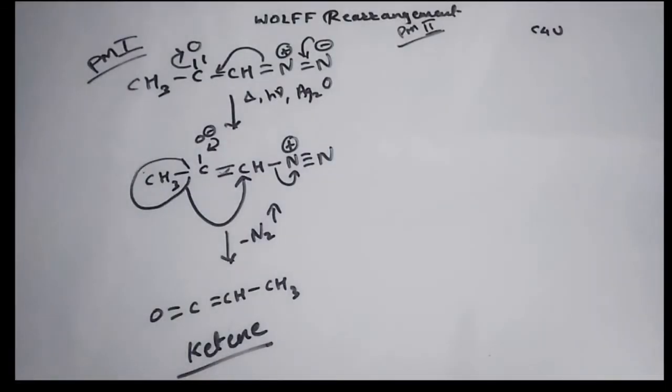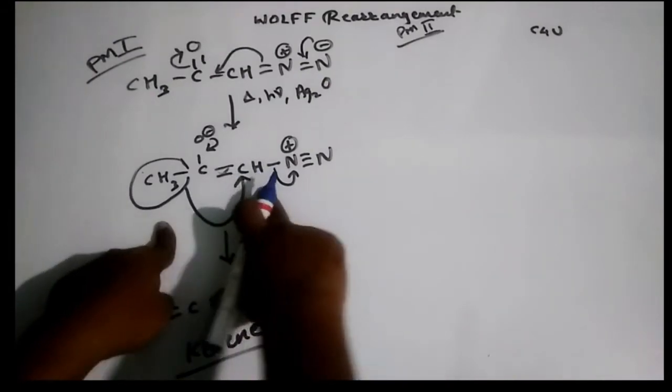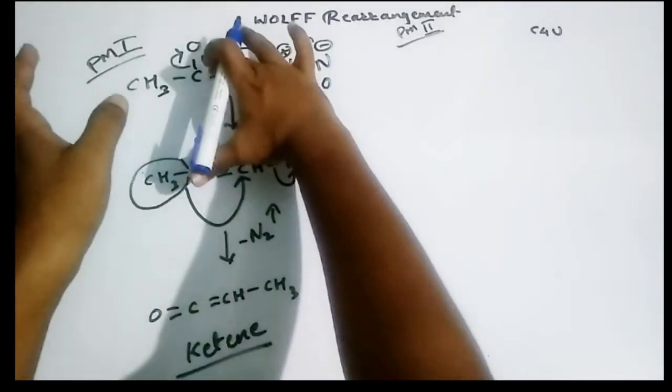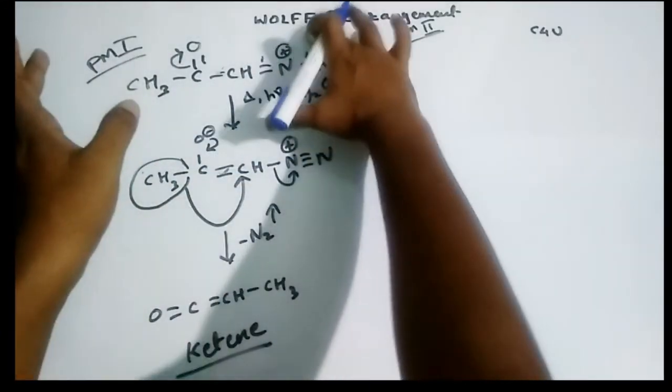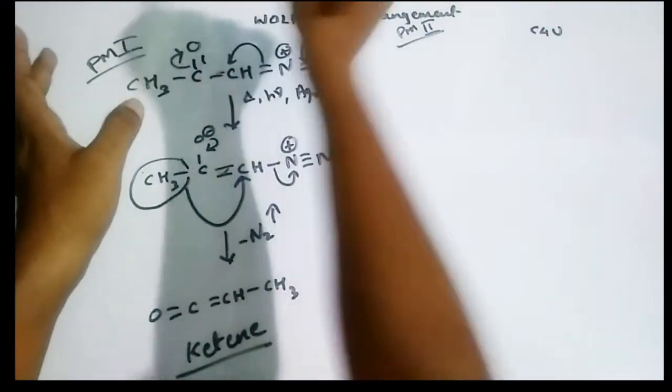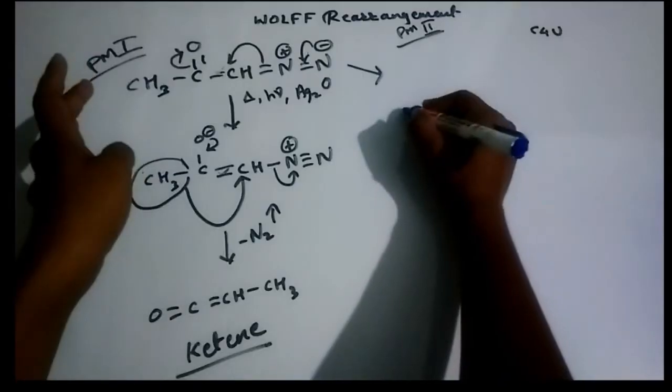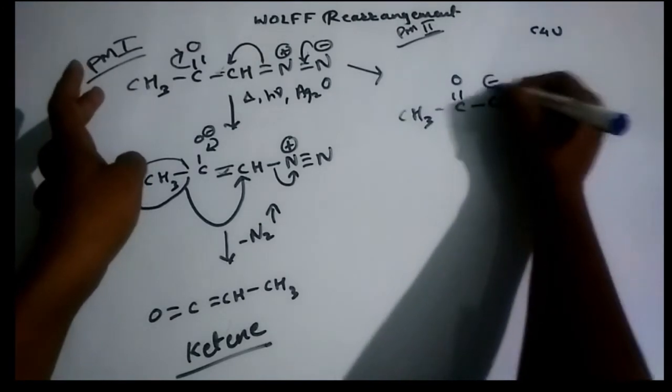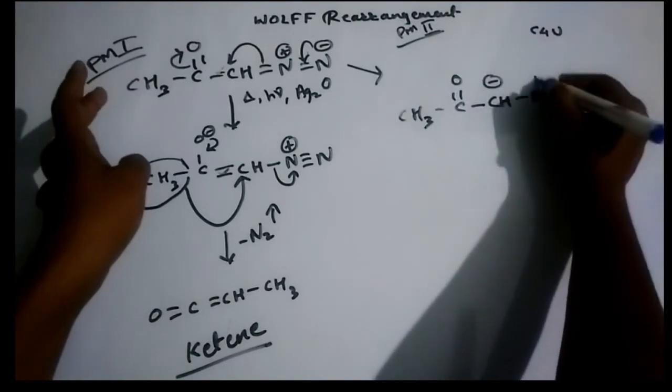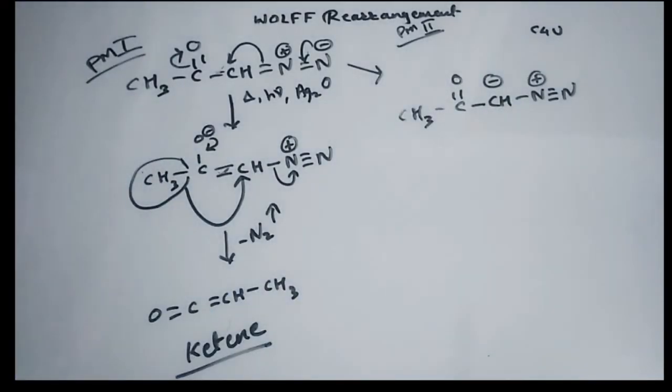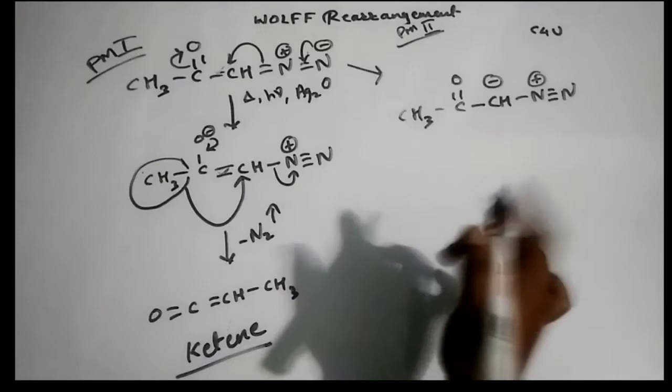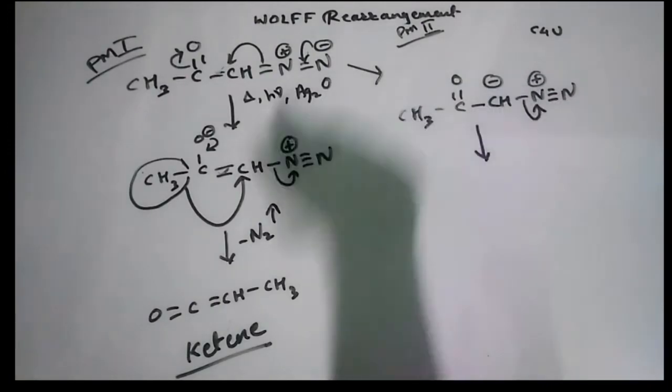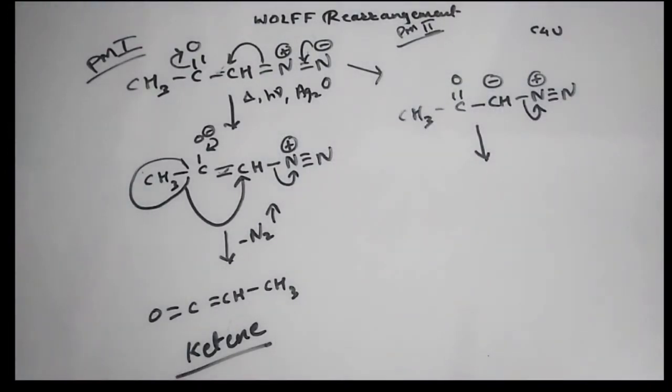Second possible mechanism. Now this structure can be written as, I am just removing this and I will give a trick to write this structure in another format which we have written earlier in the formation: CH minus N triple bond N plus. In this case, after subjection to heat, this N2 gas is supposed to leave.